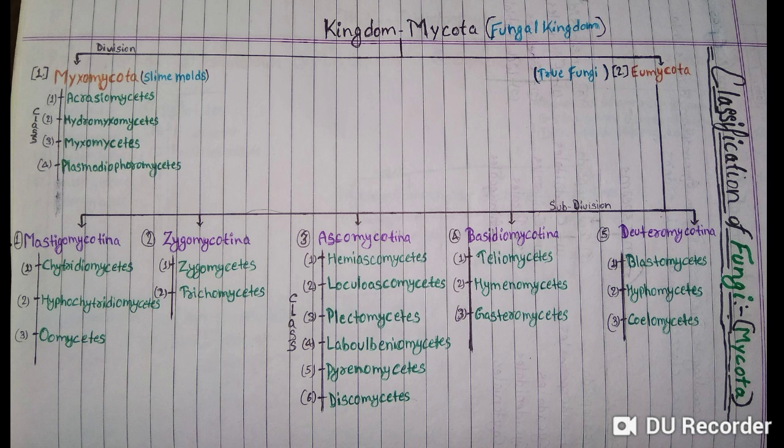The subdivision Mastigomycotina is further divided into three classes: the first class is Chytridiomycetes, the second is Hypochytridiomycetes, and the third is Oomycetes.